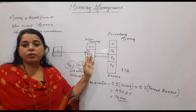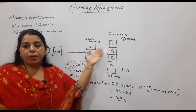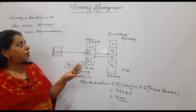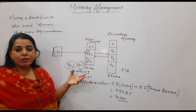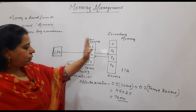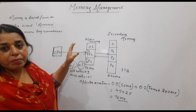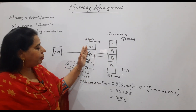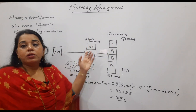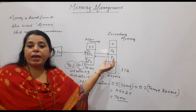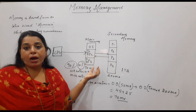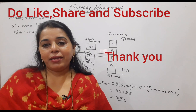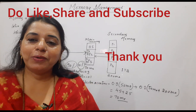The CPU has direct access only to the main memory. Instructions not present in the main memory will be loaded into it, and then the CPU fetches those instructions. What you need to learn in this complete module is: the CPU wants instructions from the main memory; instructions are present in the secondary memory; so what method is used to move these processes to the main memory and how they are placed there. This was just the introduction to memory management. Hope this session is useful to you all. Please like, share, and subscribe to my channel. Thank you, bye-bye, take care.